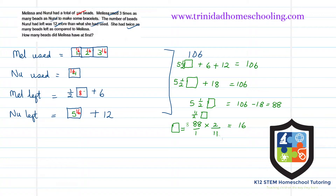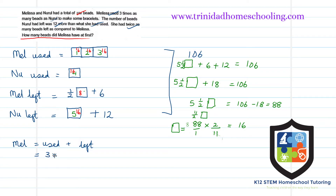We've used 106 — now let's answer the question: how many beads did Melissa have at first? Melissa had what she used plus what she left. She used three shares of 16, which is 48, and she had 8 plus 6 left, which is 14. So what Melissa had at the beginning is 48 plus 14 — that's 62 beads.